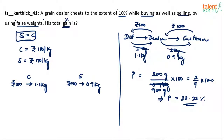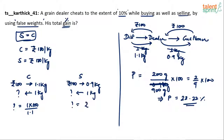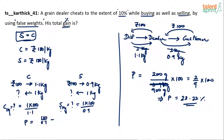If 1.1 kg costs 100 rupees, then 1 kg will cost 1 × 100 / 1.1. Similarly for selling price: if 0.9 kg sells for 100 rupees, then 1 kg will sell for 1 × 100 / 0.9. So cost price per kg is 100/1.1 and selling price per kg is 100/0.9. Now use these to find the profit. Profit percentage equals selling price minus cost price, divided by cost price, multiplied by 100.